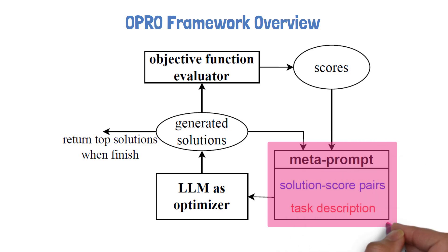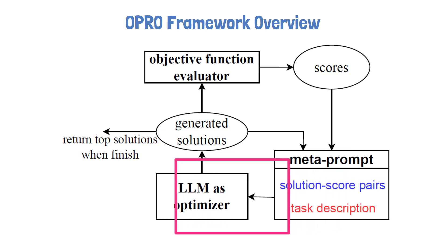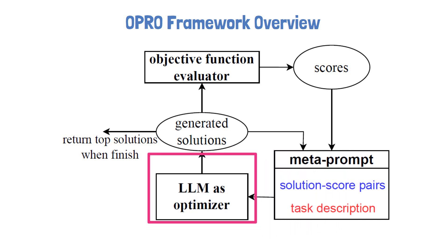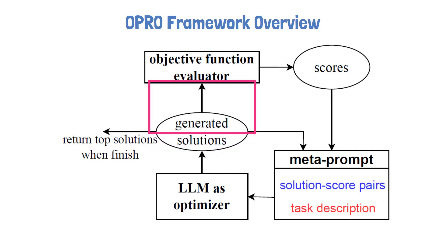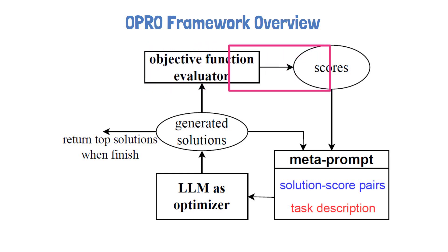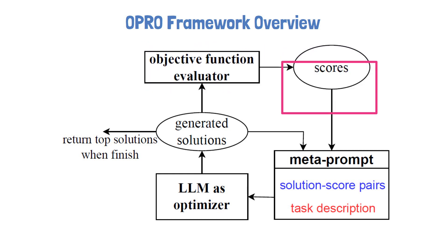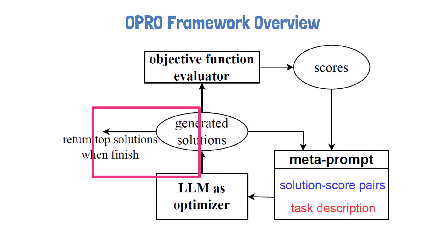On the bottom right we have a MetaPrompt, similar to the one we just saw. If we want to solve a different optimization problem, the MetaPrompt will be different. Also, if we want to solve the same optimization problem but with a different LLM as optimizer, the MetaPrompt should likely be different. Next we have the Optimizer LLM, which yields solutions as instructed by the MetaPrompt. The generated solutions or instructions are fed to the Scorer LLM, which acts as an objective function evaluator that can change depending on the optimization task. The evaluator yields scores that are added back to the MetaPrompt for the next iteration. When the process finishes, we return the top solutions as the result.